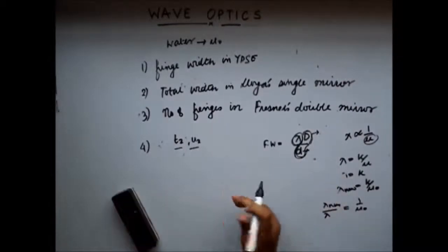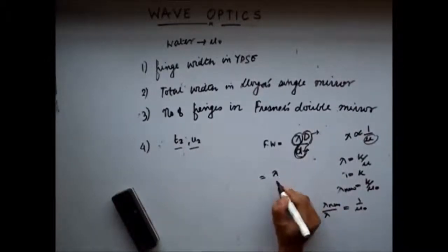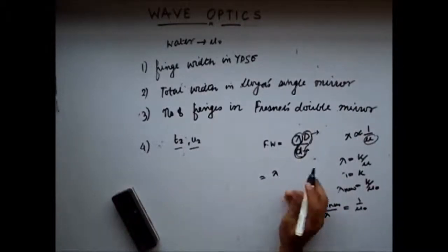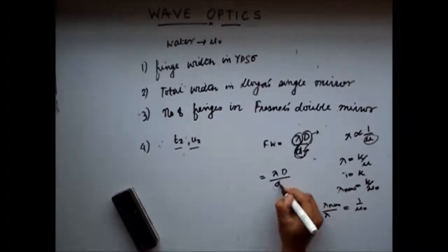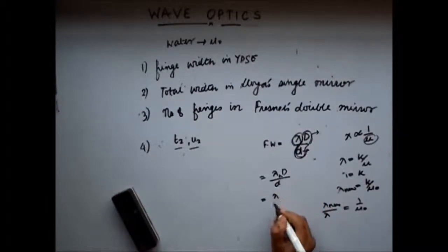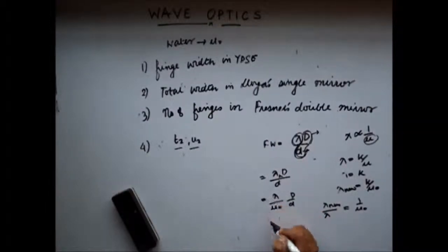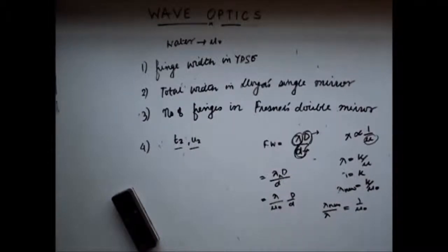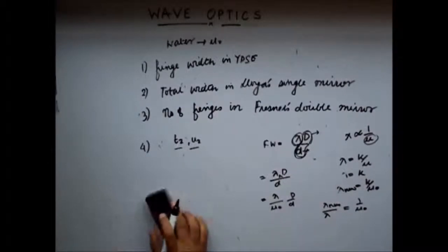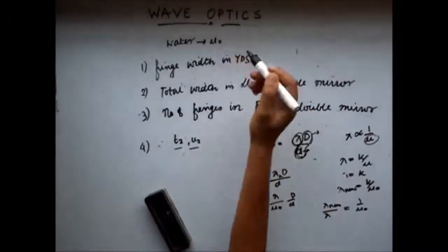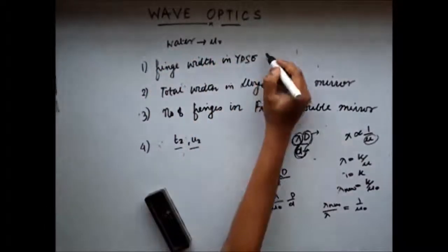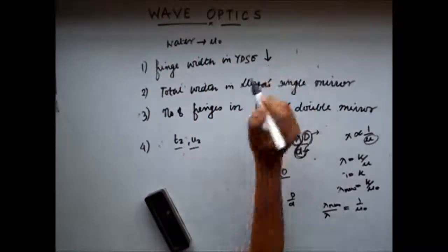The fringe width will be lambda new times d divided by d, which I can write as lambda by mu naught times d by d. So the fringe width has actually decreased by a factor of mu naught because mu naught is in the denominator. Because of the introduction of the setup in water, this fringe width decreases.